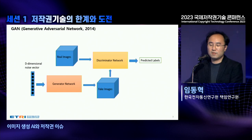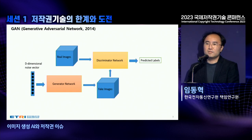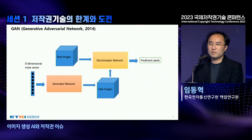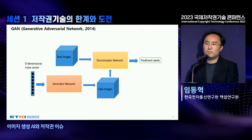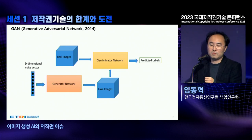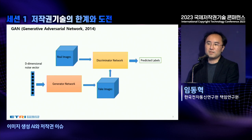In 2014, I think this is the beginning of the full-scale development of AI. GAN refers to Generative Adversarial Network. The creator tries to generate an image that looks like a real one to deceive the discriminator. The discriminator continues learning to distinguish between real and fake images, and the image created by the generator ultimately becomes very close to a real image.